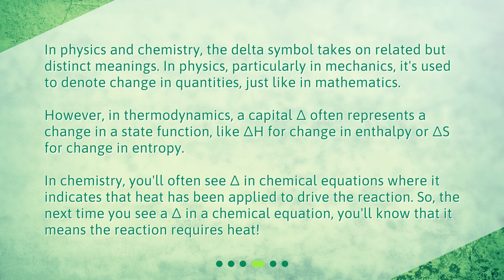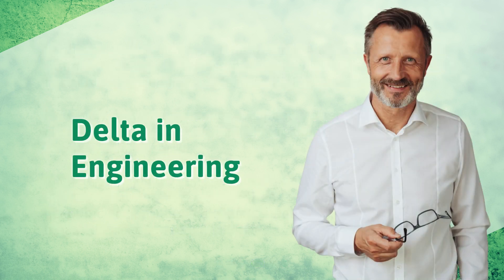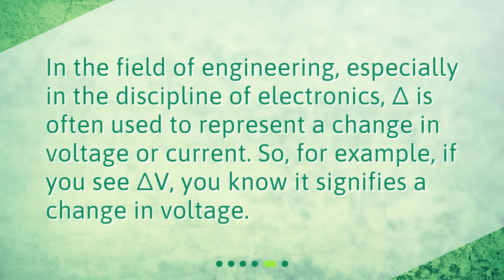So the next time you see a delta in a chemical equation, you'll know that it means the reaction requires heat. Delta in engineering. In the field of engineering, especially in the discipline of electronics, delta is often used to represent a change in voltage or current. For example, if you see ΔV, you know it signifies a change in voltage.